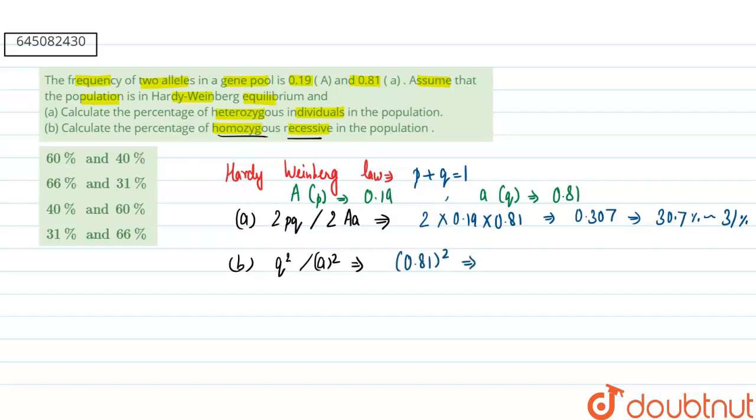So here we will do the square of 0.81 and it will equal 0.656. And when we convert this value into percentage, then it will be 65.6% or we can say 66%.